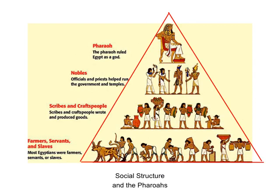In terms of the social structure of ancient Egypt, the pharaoh was at the top. He not only ruled the state but also ruled religion, and he was seen as a god on earth.